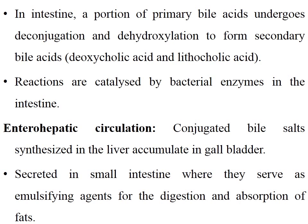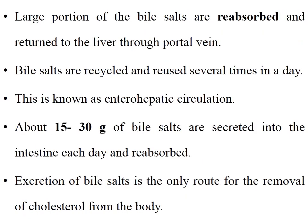In the intestine, a portion of primary bile acids undergo deconjugation and dehydroxylation to form secondary bile acids — deoxycholic acid and lithocholic acid. These reactions are catalyzed by bacterial enzymes in the intestine. In enterohepatic circulation, conjugated bile acids or salts synthesized in the liver accumulate in the gallbladder and are secreted into the small intestine, where they serve as emulsifying agents for the digestion and absorption of fats.